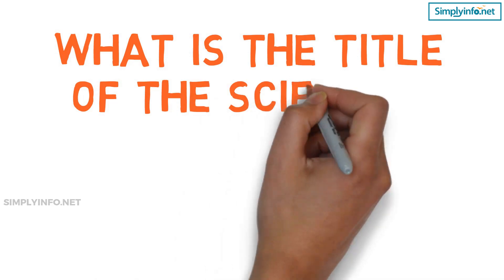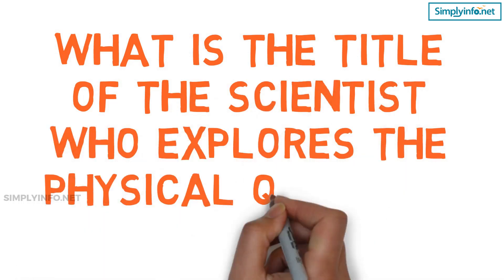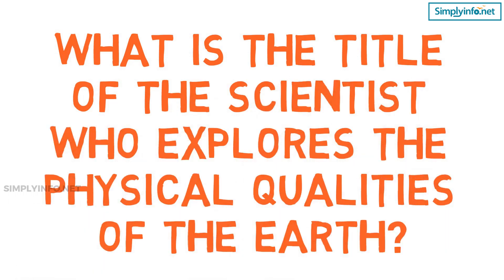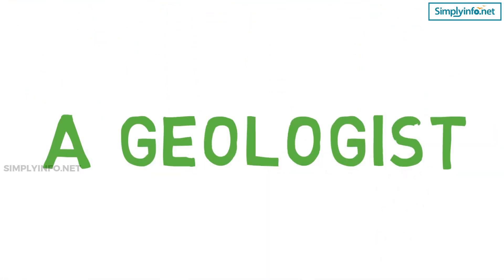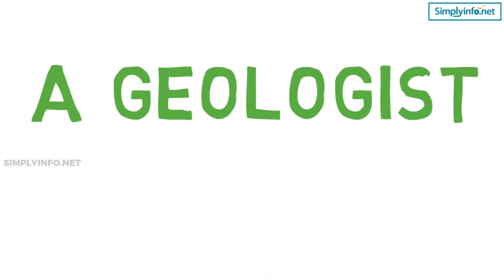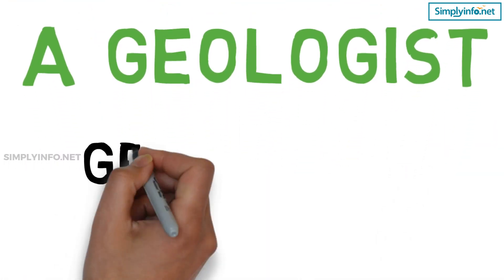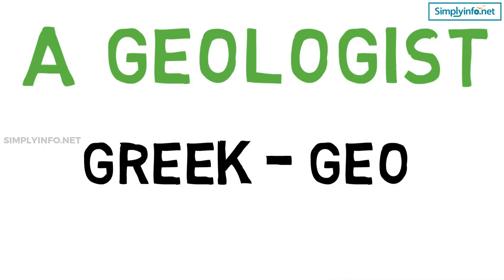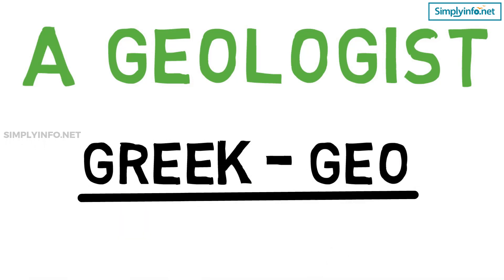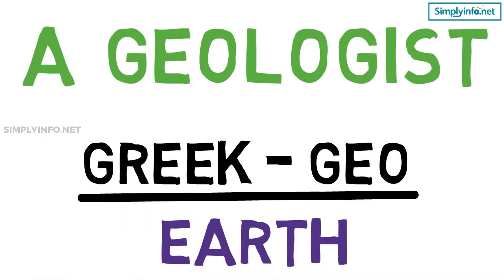What is the title of the scientist who explores the physical qualities of the earth? A geologist. Geologist is derived from the Greek word geo or ge, which means earth. The science is geology.